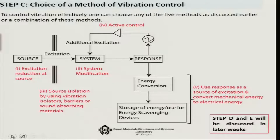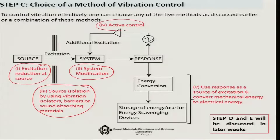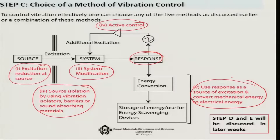Next is step C, where you actually choose a method of vibration control. In the very first class I talked about five such methods: one is excitation reduction at the source itself; another is system modification; another is source isolation; then there is active control where you take the system response into consideration; and lastly, a method where you use the response as a source of excitation and convert mechanical energy to electrical energy. Then you carry out an analytical design and hardware implementation, which we will discuss as this course proceeds.